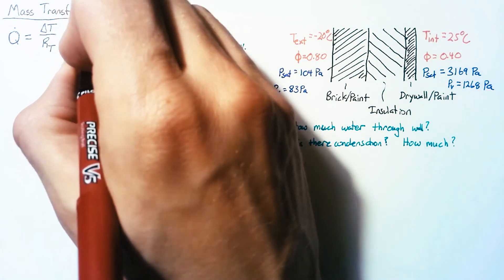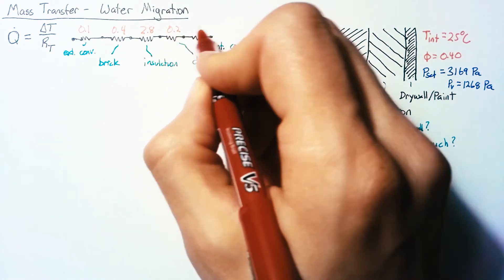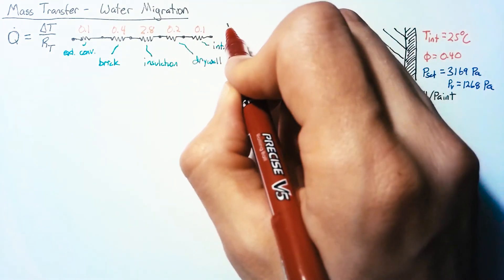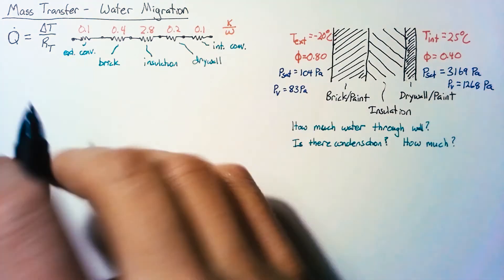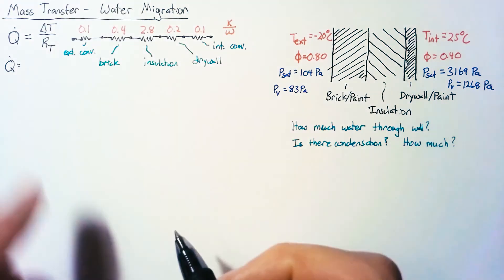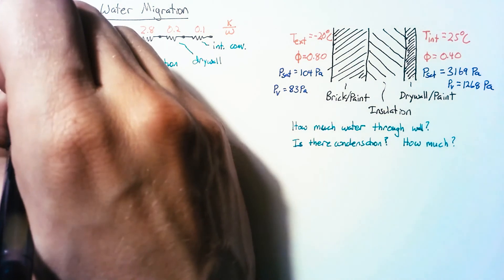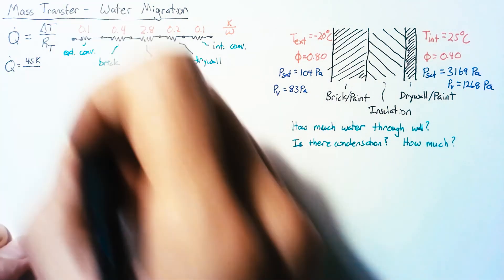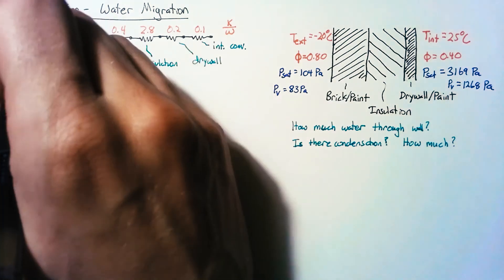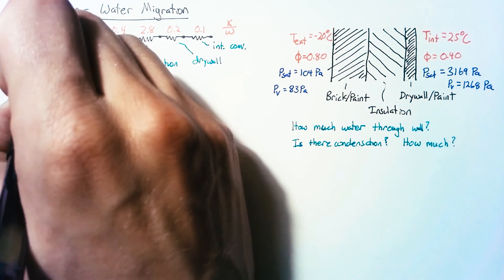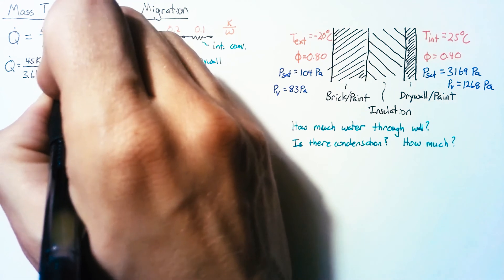We'll assign values to these resistors — which may not be perfectly realistic but are good enough for our purposes — all in units of Kelvin per watt. Plugging in numbers, our delta T is 45 Kelvin, divided by the sum of all resistors which totals 3.6 K/W, giving us a Q-dot of 12.5 watts.